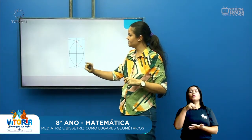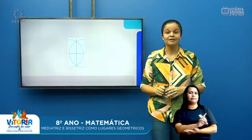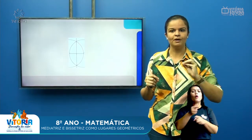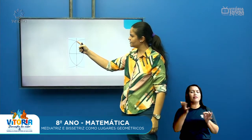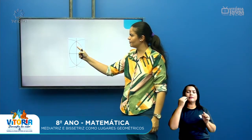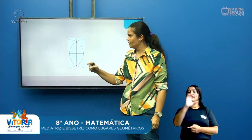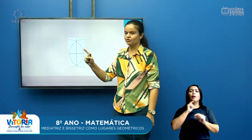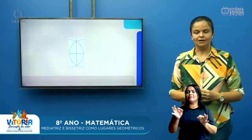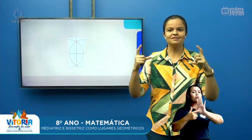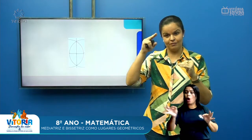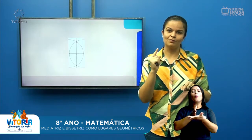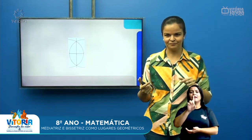Quando os dois arcos se encontram, formam um ponto. Aqui eu formei dois pontos: chamei de C e de D. A partir do momento que eles se cruzaram, tracei outra reta ligando um ponto ao outro — chamei de C e D — e marquei essa reta com letra minúscula. O que eu quero mostrar é que esse encontro formou a mediatriz, que é o meio dessa figura.